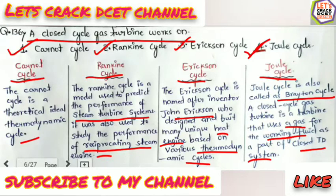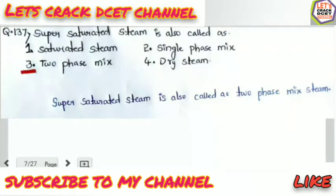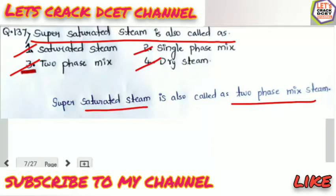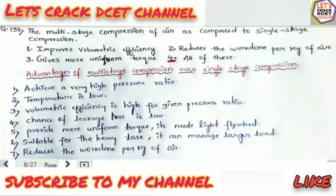Question number 137: Super saturated steam is also called as — option 1: saturated steam; option 2: single phase mix; option 3: two phase mix; option 4: dry steam. Super saturated steam is also called a two-phase mix steam. The correct option is option 3: two phase mix.